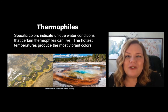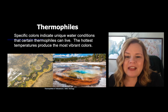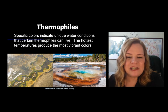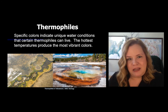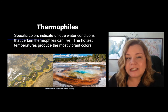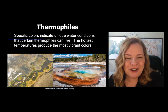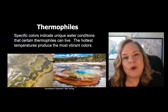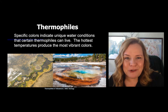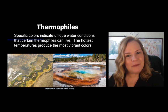Each color represents a unique heat signature that particular species and groups of bacteria can thrive in. The hottest temperatures produce the most vibrant colors. If Yellowstone loses its groundwater resource because of climate change or a mega drought, these organisms won't be able to live anymore — the thermophiles must have both heat and water to survive.